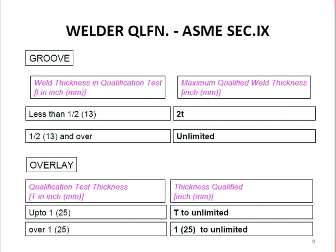For weld metal thickness in groove welds: if the test coupon thickness is less than half an inch (13 mm), the maximum qualified thickness is 2T. If the test coupon is 13 mm or over, the welder is qualified for unlimited thickness. For overlay welds, if the thickness is over one inch, qualification covers one inch to unlimited; if it is up to one inch, qualification is 2T to unlimited.